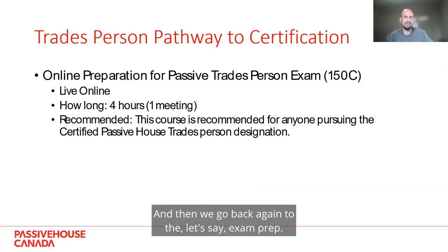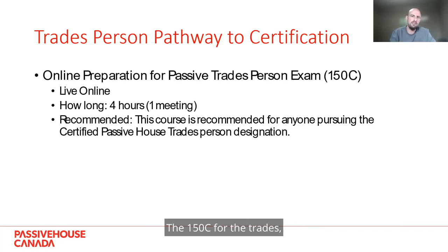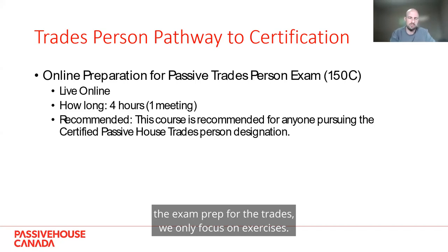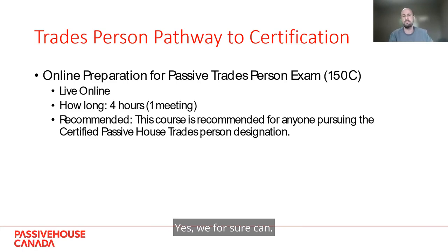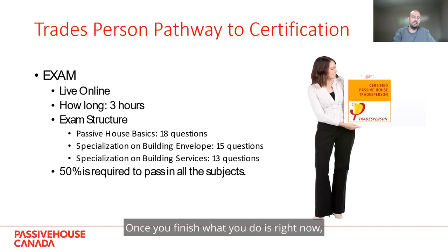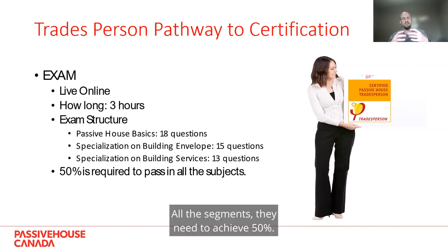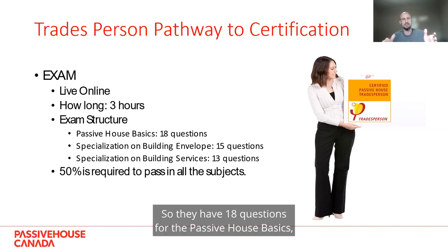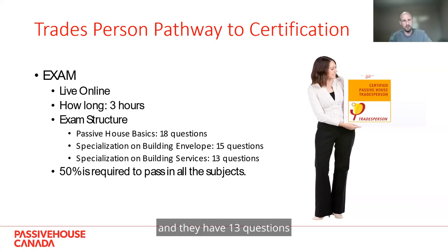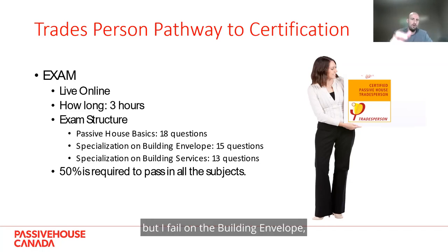Then we go to the exam prep — the 150C. We deliver this live online; it doesn't make sense to sit them for another four hours in person after all the information they've already absorbed. The 150C for trades focuses only on exercises. The exam is three hours long, divided into three segments: 18 questions on Passive House basics, 15 questions on building envelope specialization, and 13 questions on building services specialization. They need 50% on each segment. If you pass building services but fail building envelope, you still get your certificate — you just don't get the specialization in building envelope.